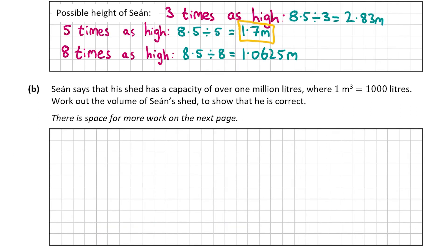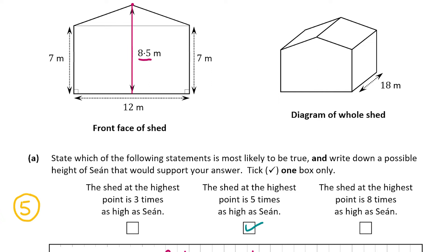Now let's look at part B. Sean's shed has a capacity of over one million liters and we're asked to work out the volume of Sean's shed, showing that he is correct. The shape of Sean's shed is a prism. To find the volume of a prism, you get the area of the front face and multiply it by the length of the entire shed.